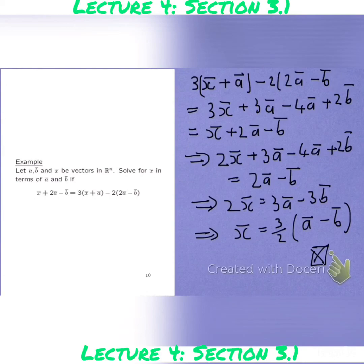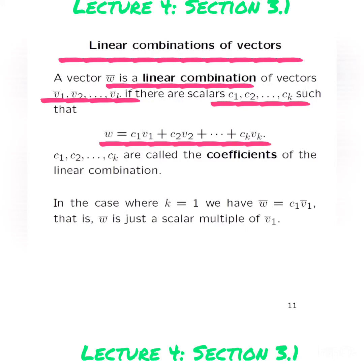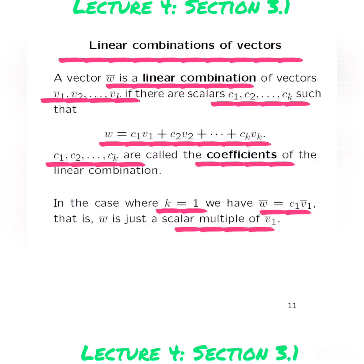Next, linear combinations of vectors. If w is a vector that is a linear combination of v1, v2, ..., vk, then we can find scalars c1, c2, ..., ck such that w-bar equals c1·v1 plus c2·v2 plus ... plus ck·vk. The values c1, c2, ..., ck are called the coefficients of the linear combination. For the special case where k equals 1, vector w-bar equals c1·v1, meaning w is a scalar multiple of v1.